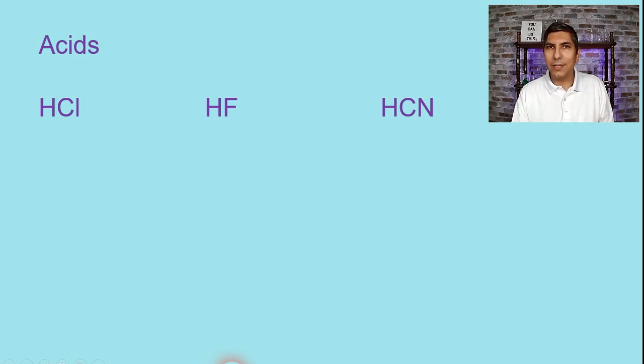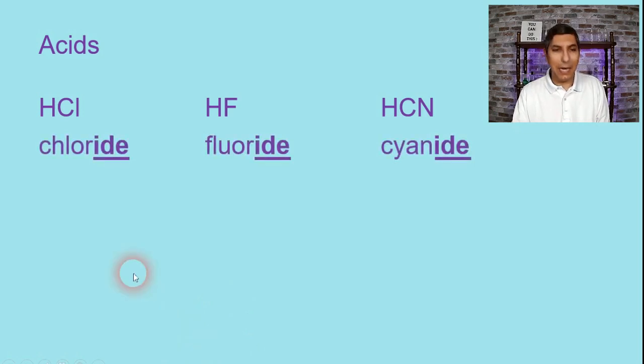Now, these three acids have something else in common as well. As you look at these three formulas here, they have anions there that end with IDE. So for example, in the first example, Cl is the chloride ion. And then over here, we have F, which is the fluoride ion. And then over here, we have CN, which is the cyanide ion. They all have anions that end with the IDE suffix.